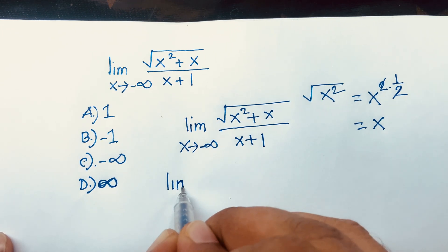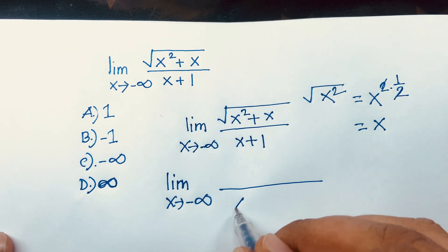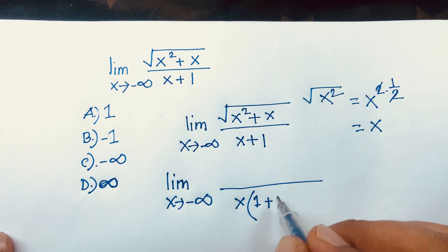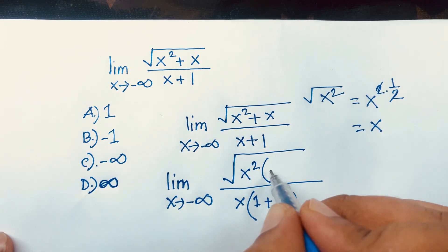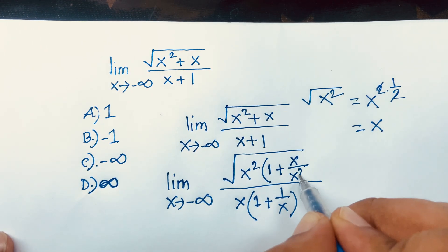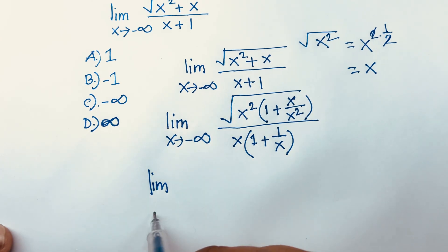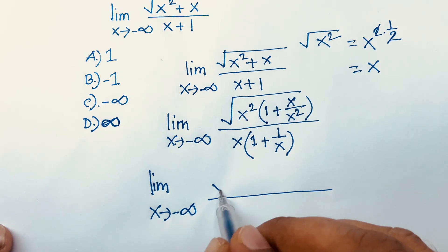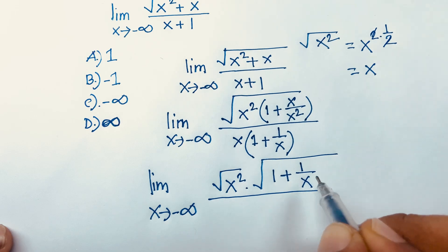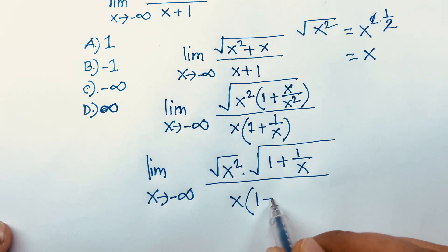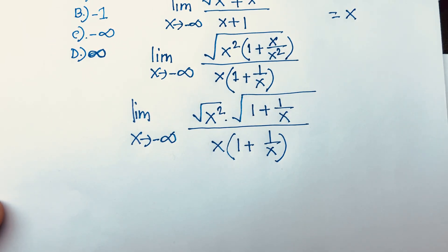Now let's factor. We have limit x tends to minus infinity of √(x² + x) + (x + 1). Factor x from (x + 1): that gives x times (1 + 1/x). For the square root, factor out x²: √(x²(1 + 1/x)) = √(x²) · √(1 + 1/x). So we get limit x→-∞ of √(x²) · √(1 + 1/x) + x(1 + 1/x).